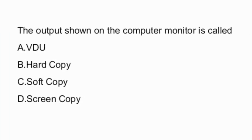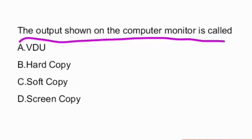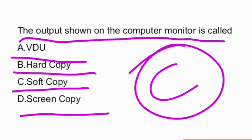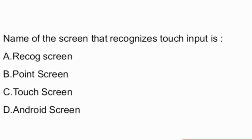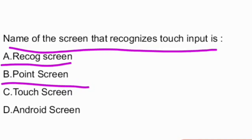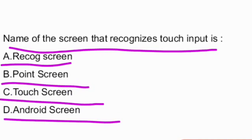Next question: the output shown on the computer monitor is called? Options are: video, hard copy, soft copy, screen copy. The output shown on the computer monitor is called soft copy — that is option C, the right answer. Next question: the name of the screen that recognizes touch input.